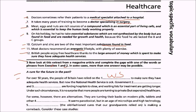Government cutbacks and funding issues are forcing hospitals to close and waiting lists for treatment are getting longer. Under such circumstances it is no surprise that more people are turning to private but expensive health care. Some, however, are turning their backs on modern pills, tablets and other conventional medicine. It seems paradoxical but in the age of microchips and high technology, traditional medicine — the old-fashioned cure that our grandparents relied on — is making a comeback.